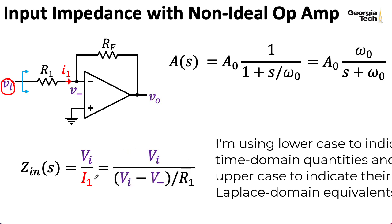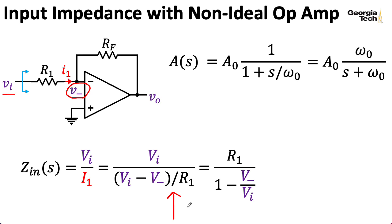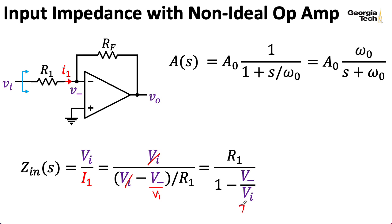So what is I1? I1 by Ohm's law is going to be VI minus the voltage at the negative terminal divided by R1. Let me multiply the numerator and the denominator of this expression by R1, so I get rid of the R1 in the denominator and wind up with an R1 on top. I'm also going to divide the numerator and the denominator by VI, so the VI terms will disappear and this V minus will wind up with a VI in the denominator.